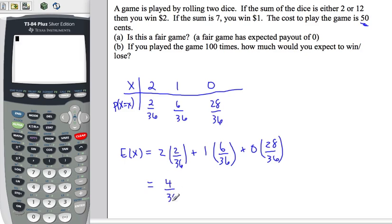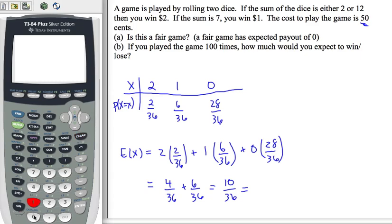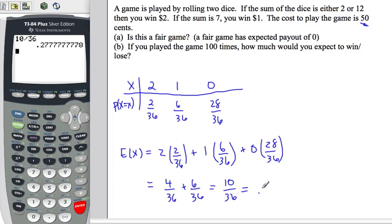So: four out of 36, plus six out of 36, plus zero out of 36 equals 10 out of 36, which is five out of 18. Let's get a decimal so we can compare to 50 cents — that's about 27.7 cents.